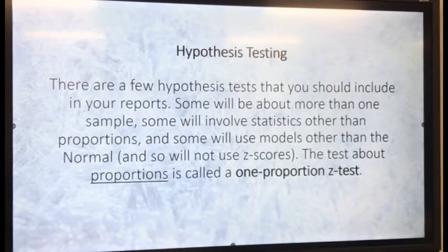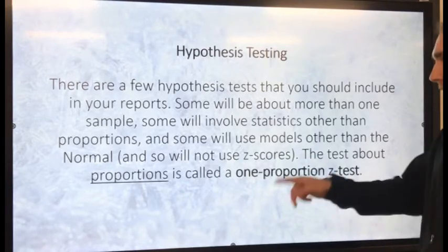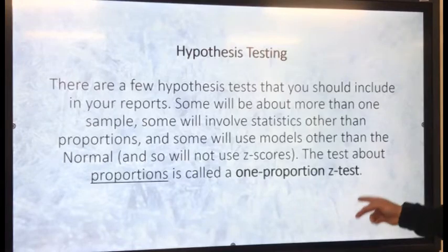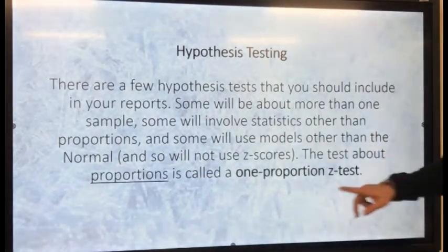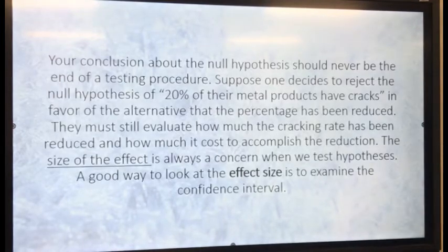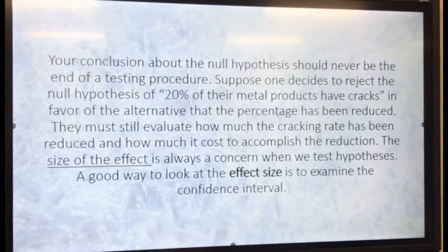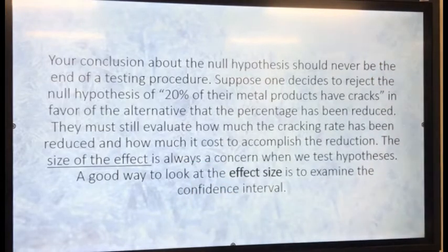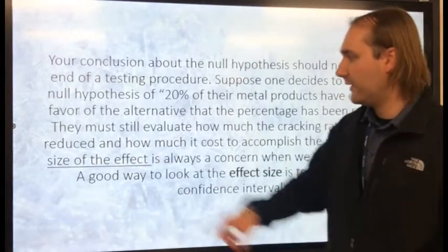Hypothesis testing — there are a few hypothesis tests that you should include in your reports. Some will be about more than one sample, some will involve statistics other than proportions, and some will use models other than the normal model. So you will not always be using Z-scores. The test about proportions is called the one-proportion Z-test, and that's what this chapter covers. Your conclusion about the null hypothesis should never be the end of a test procedure. For example, if one decides to reject the null hypothesis that 20% of a company's metal products have cracks, they must still evaluate how much the crack rate has been reduced and how much it costs to accomplish the reduction. The size of the effect is always a concern when we test hypotheses. A good way to look at the effect size is to examine the confidence interval.